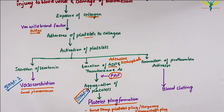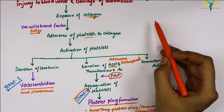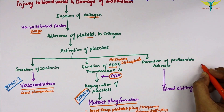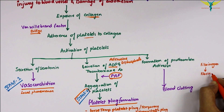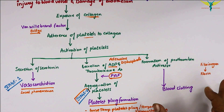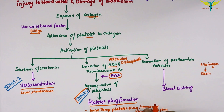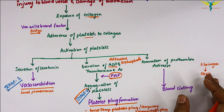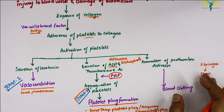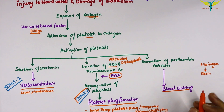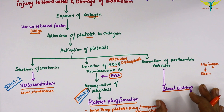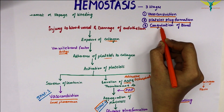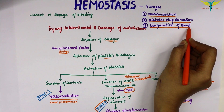Stage three is coagulation of the blood. During coagulation, fibrinogen is converted into fibrin. These fibrin threads attach to the loose platelet plug, blocking the ruptured part of the blood vessel and completely preventing further blood loss.